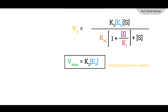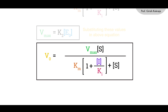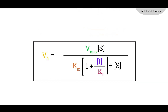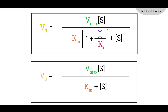Substituting Vmax = K2 · E0, the equation becomes: V0 = (Vmax · S) / (Km · (1 + I/Ki) + S). Comparing this with the general Michaelis-Menten equation for a non-inhibited reaction — V0 = (Vmax · S) / (Km + S) — it is evident that only the value of Km changes; it increases by the factor (1 + I/Ki), while Vmax remains unchanged.